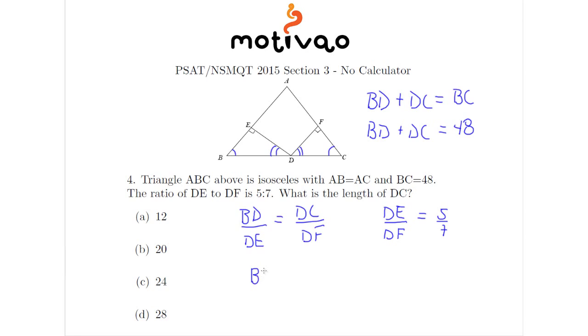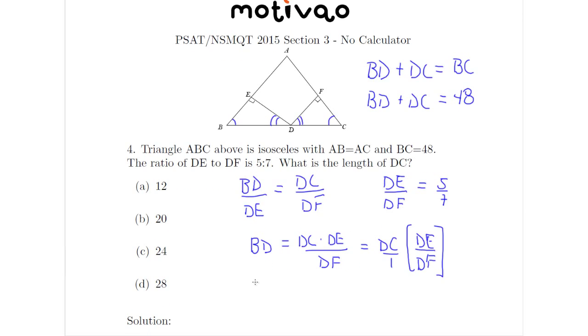Therefore I can multiply DE in both sides. So that means that BD equals DC times DE over DF. Now that is equal to DC times the fraction DE over DF, because DC I can write it over 1. But what is DE over DF? It's 5 sevenths.